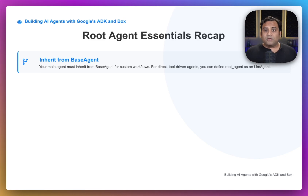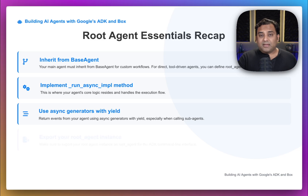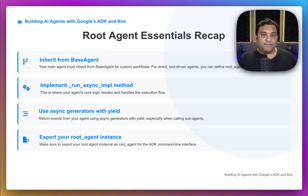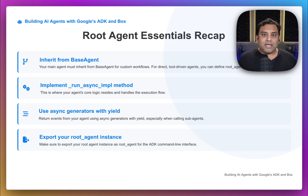However, if your goal is a direct, tool-driven agent, you can define your root agent directly as an agent or LLM agent. If you choose the custom base agent path, two points are very important: you must implement the run_async_imp method to house your orchestration logic, and you'll use async generators with yield to manage the flow of events from your sub-agents. And finally, the last point is universal and applies to both patterns — you must export your agent instance as root_agent. This is a critical convention, as it's how the ADK command line tools discover and launch your application.